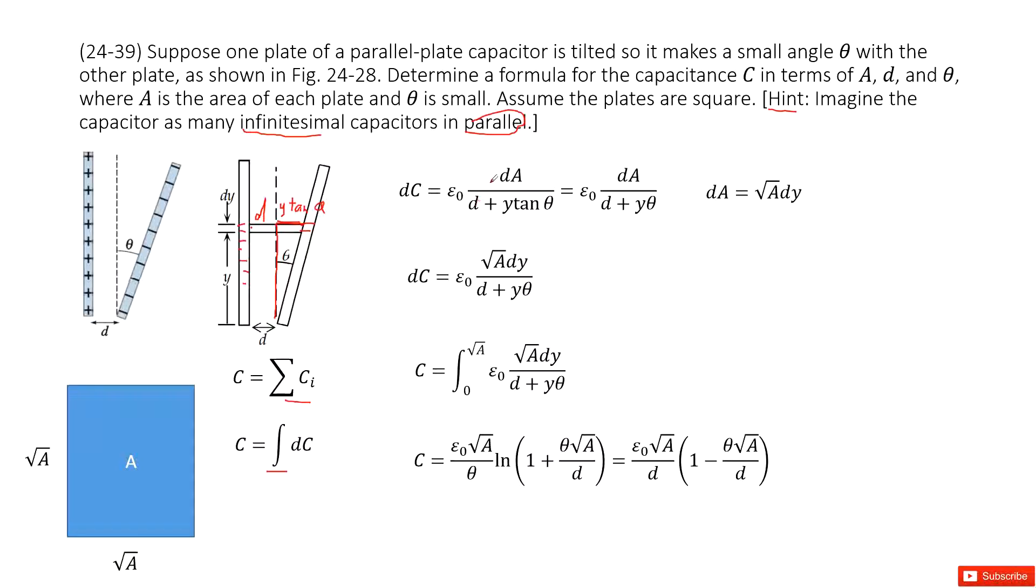And it also tells you this theta is small. Theta is small makes tangent theta equal to theta. So the tangent theta can be simplified as theta.